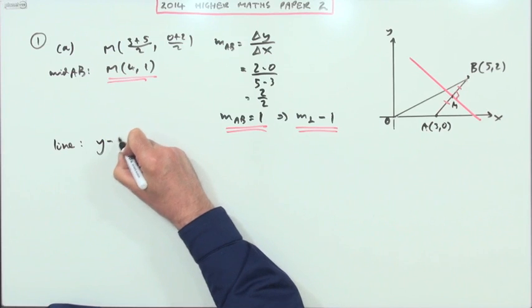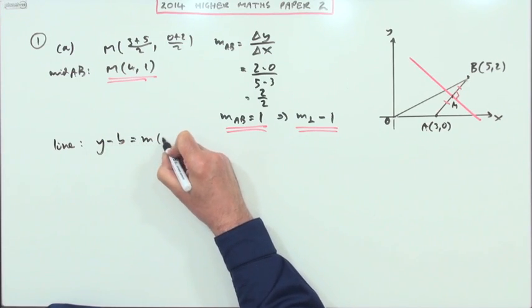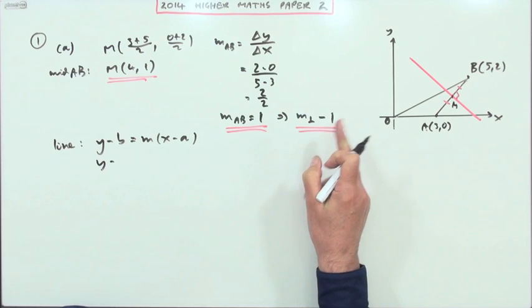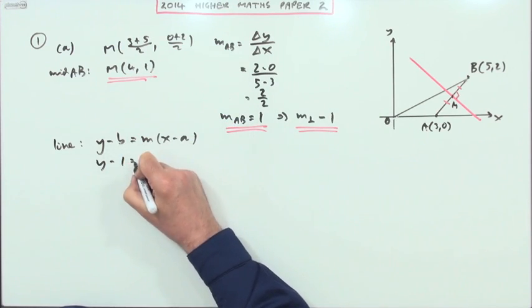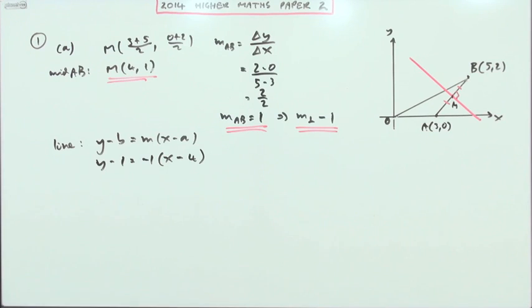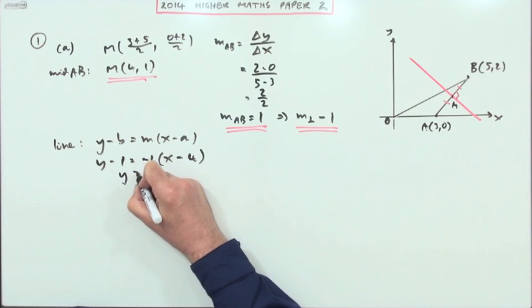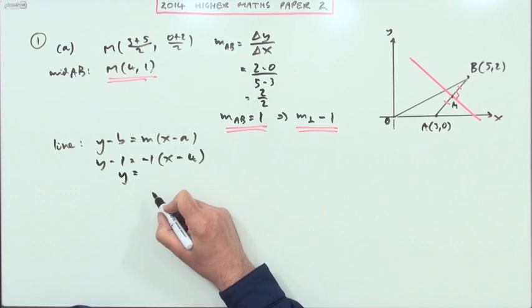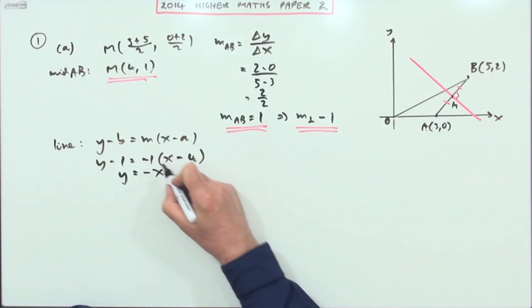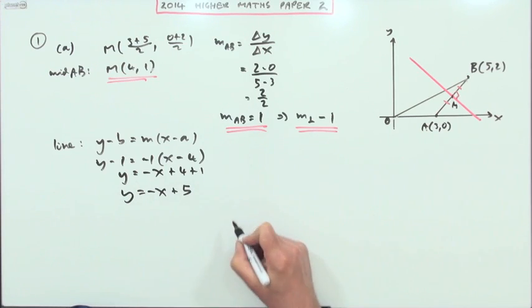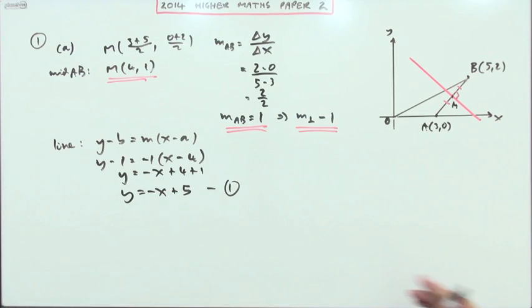So the line I'm looking for, I'll use y - b = m(x - a). y minus the y coordinate which is 1 equals the gradient -1 times x minus the x coordinate which is 4. That may well be all that's required, but I'm going to finish it off anyway, especially if I'm going to be using it later in a substitution. -x + 4 + 1, so I've got y = -x + 5, and I'll call that equation 1 because I know I'm going to use it later.